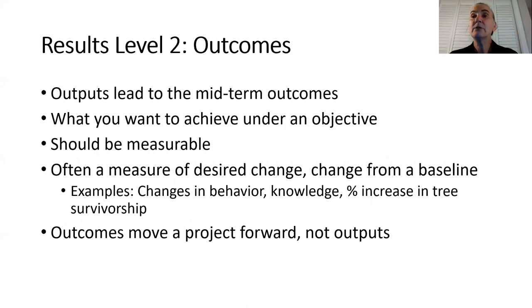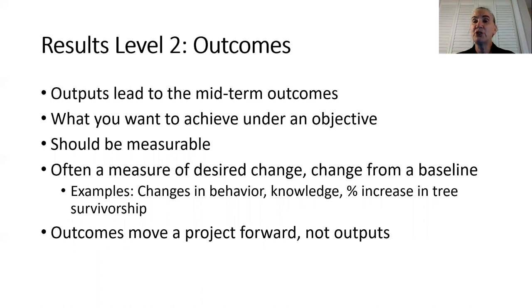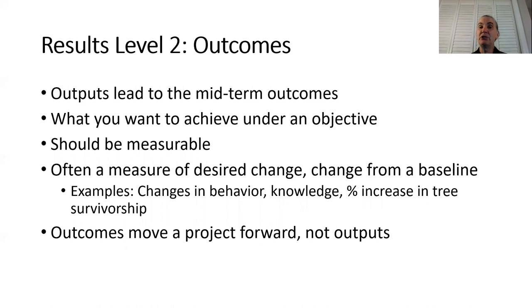The next level of results are the outcomes. The outputs lead to the midterm outcomes — this is actually what you want to achieve under an objective. These should be measurable and are often a measure of desired change from a baseline. For example, changes in behavior and knowledge, or an increase in tree survivorship. The outcomes move a project forward, not the outputs.